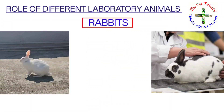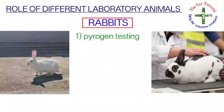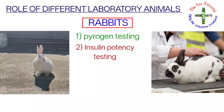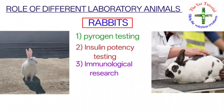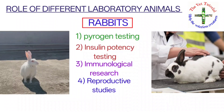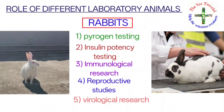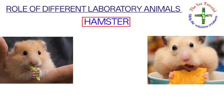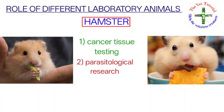Rabbits are used for pyrogen testing, insulin potency testing, immunological research, reproductive studies, and virological research. Hamsters are used for cancer tissue testing, parasitological research, and virological researches — that is, the study of viruses and viral diseases.